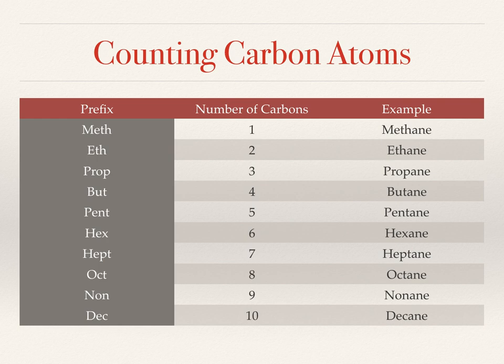In the table you can see the prefix for the names, the number of carbon atoms, and an example of a molecule named as such. A molecule containing one carbon atom is given a name prefixed by 'meth', the example being methane. Molecules containing two carbon atoms are prefixed by 'eth', so an example here would be ethane or ethanol, and so on down the list.